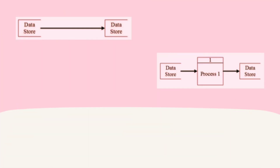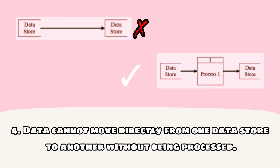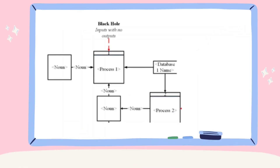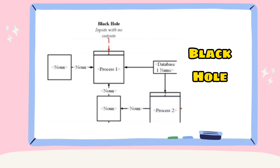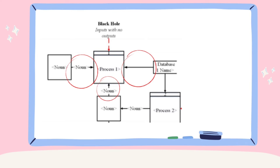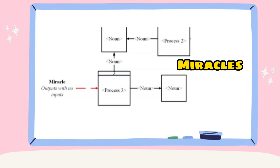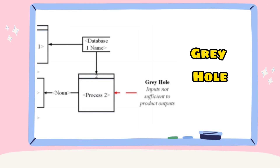Rule number four: data cannot move directly from one data store to another without being processed. There are other frequently made mistakes in DFD. A second class of DFD mistakes arise when the outputs from one processing step do not match its inputs, and they can be classified as: Black holes — a processing step may have input flows but no output flows; Miracles — a processing step may have output flows but no input flows; and Gray holes — a processing step may have outputs that are greater than the sum of its inputs.